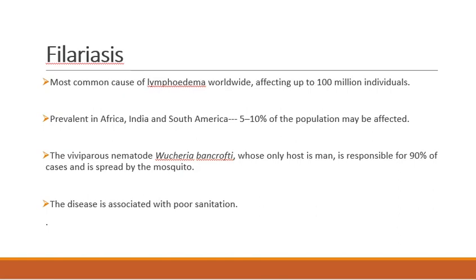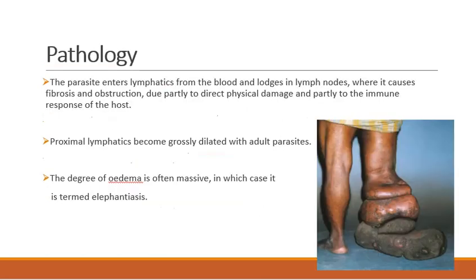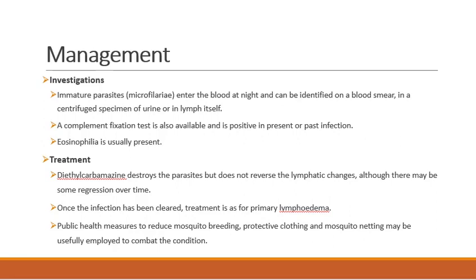Filariasis is the most common form of lymphedema worldwide, affecting up to 10 million individuals. It is more prevalent in Africa, India, and South America; 5 to 10% of the total population may be affected. It is caused by the nematode Wuchereria bancrofti, for which the only host is man — responsible for 90% of cases. The mode of spread is through mosquitoes and is associated with poor sanitation. Parasites enter the lymphatics from the blood and settle in the lymph nodes, causing fibrosis and obstruction through direct physical damage and immune response. Proximal lymphatics become dilated with adult parasites, and the degree of edema can be massive — also known as elephantiasis.